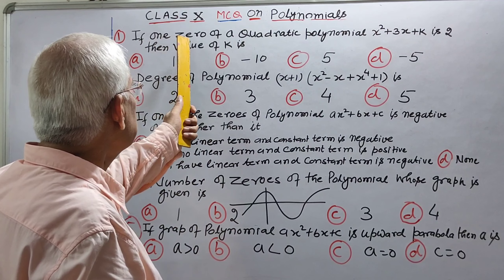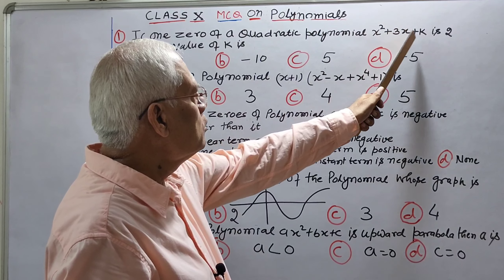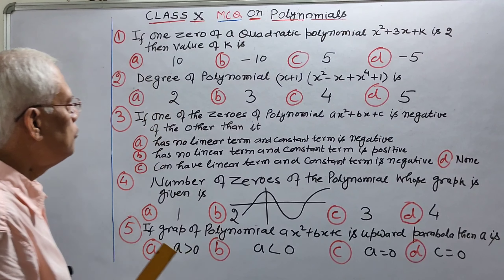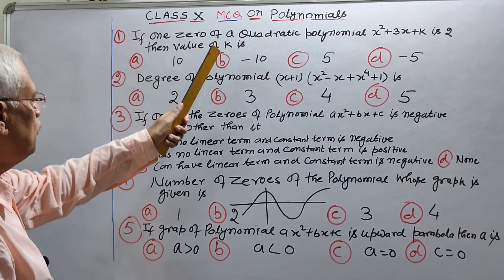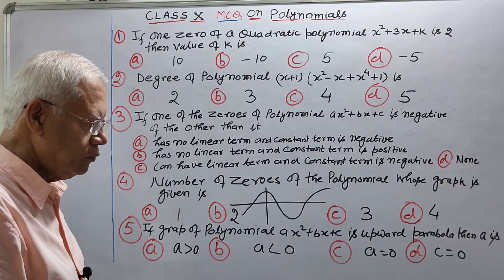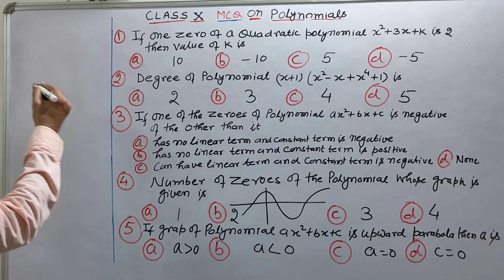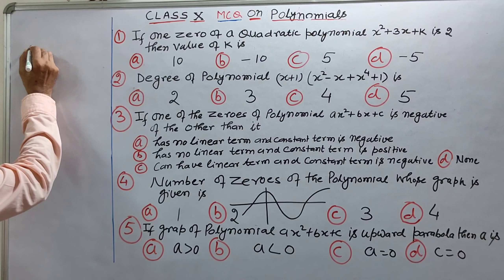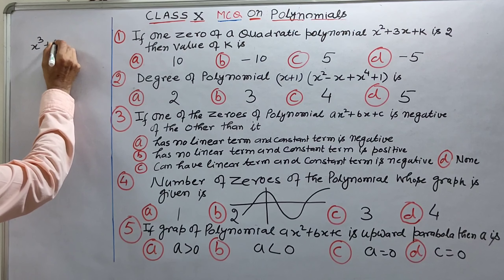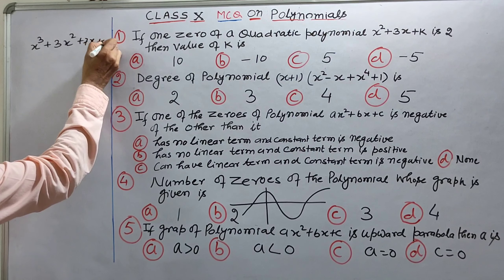First question: one zero of a quadratic polynomial is two. Then the value of k is — given that the polynomial is xk, 3x square, 7x plus 9.